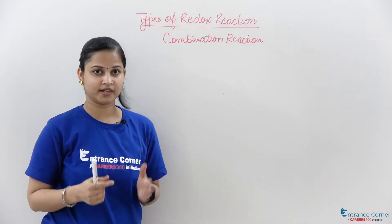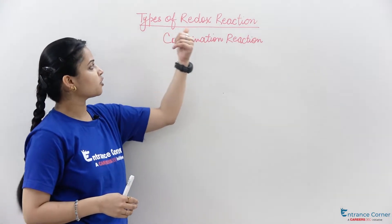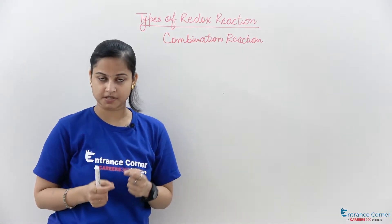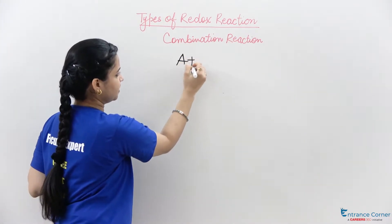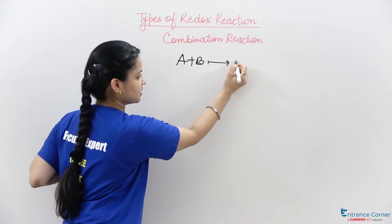Hello everyone, so in this video I'll explain you about types of redox reaction. The first type is combination reactions, that means A plus B will give us C.